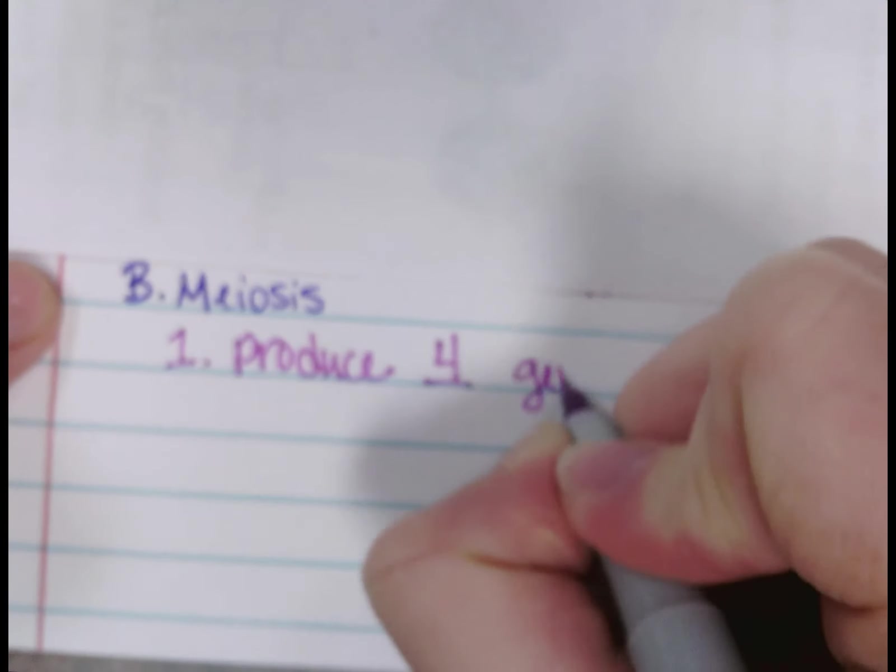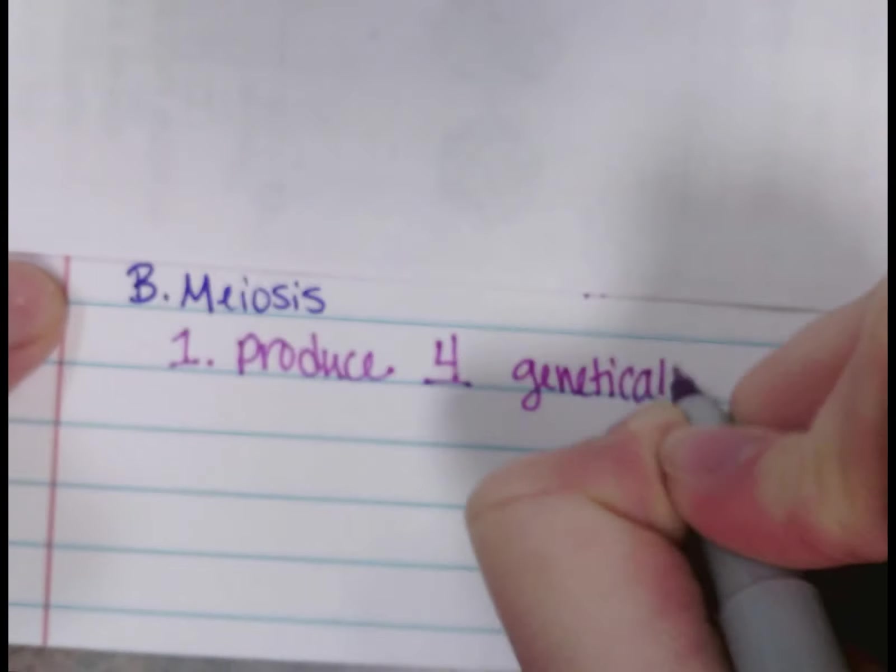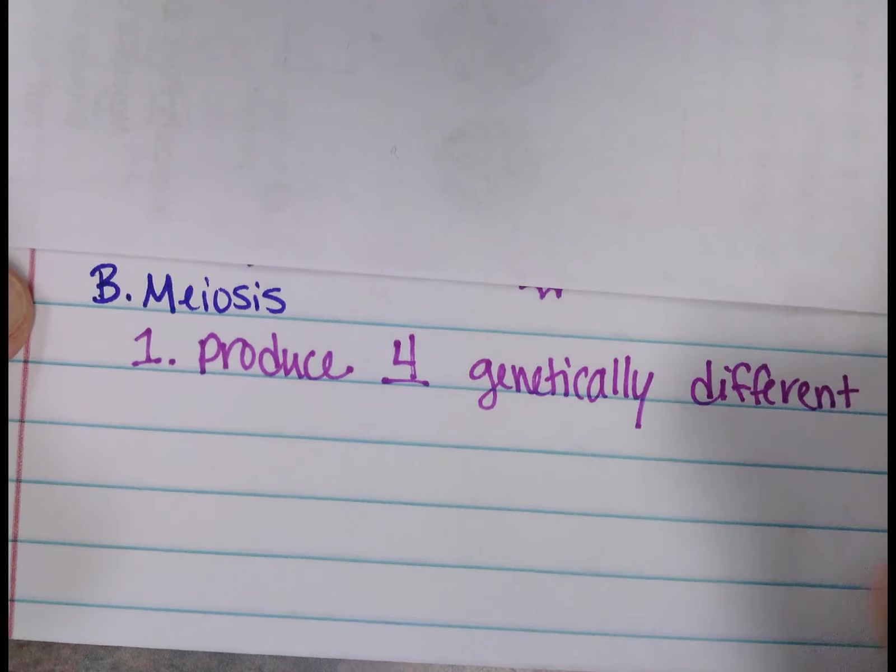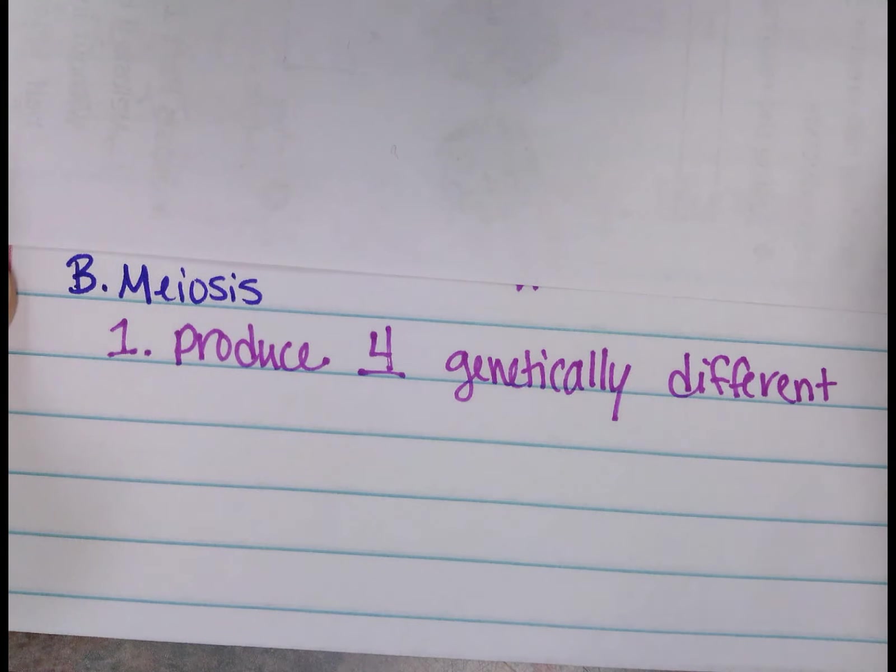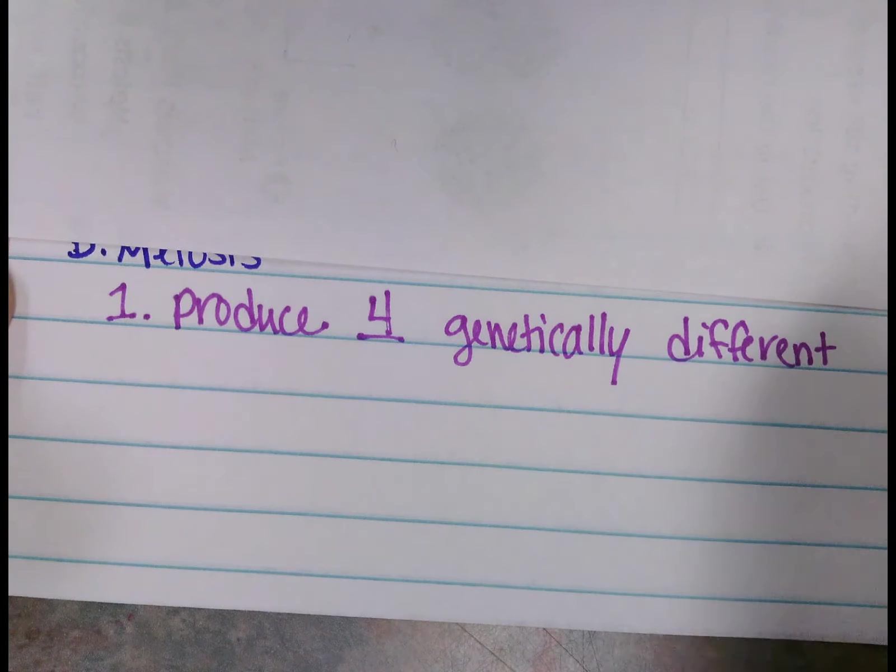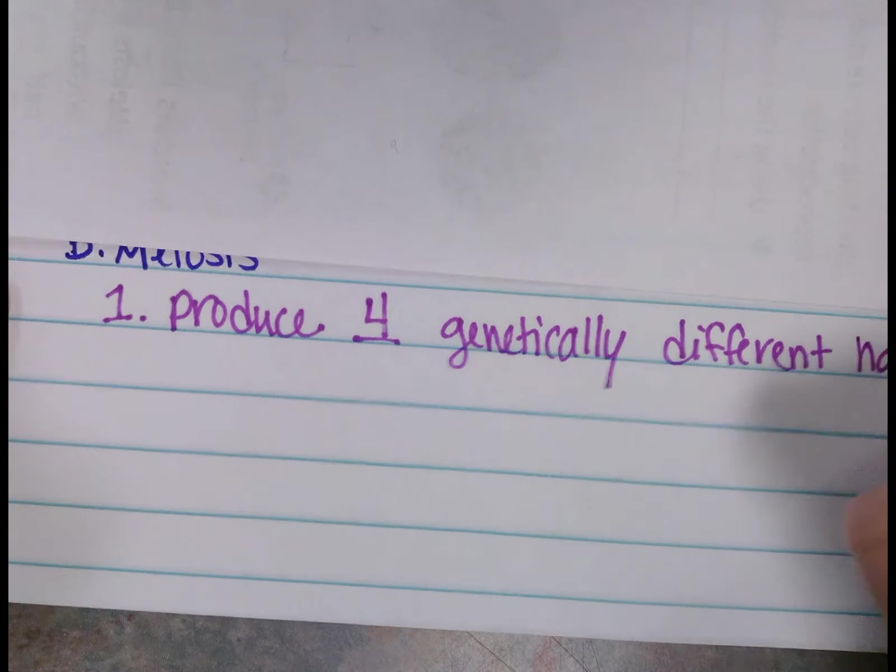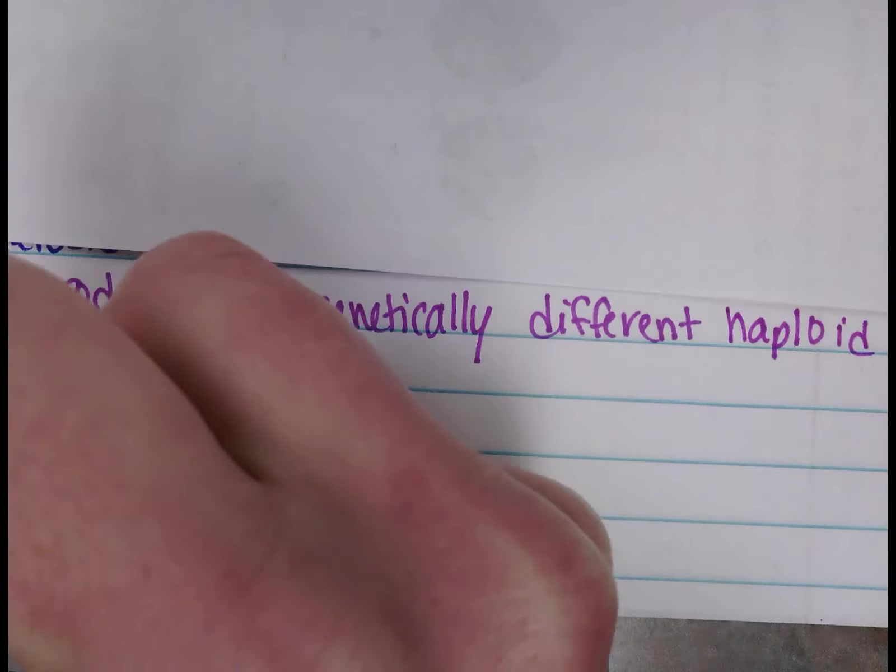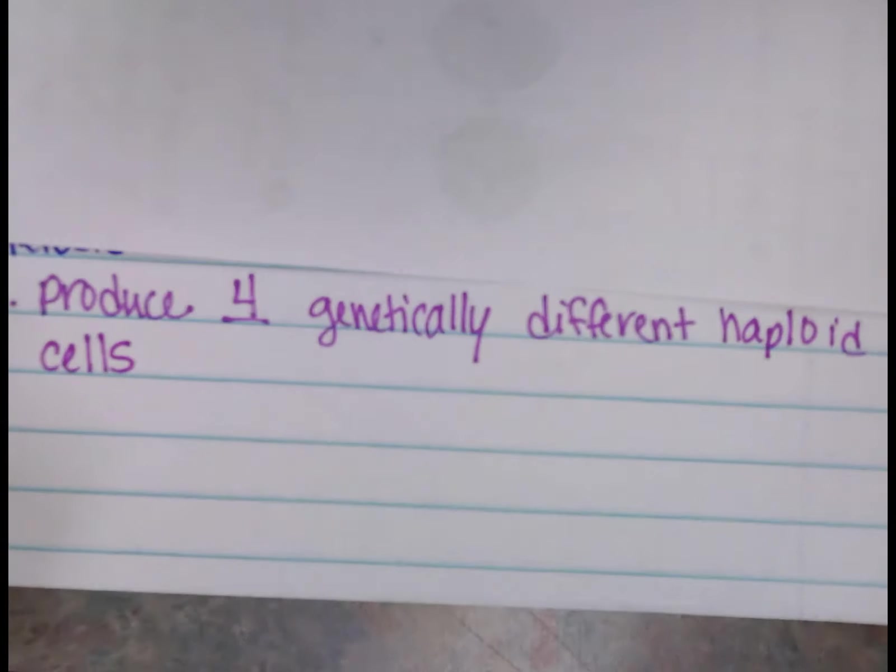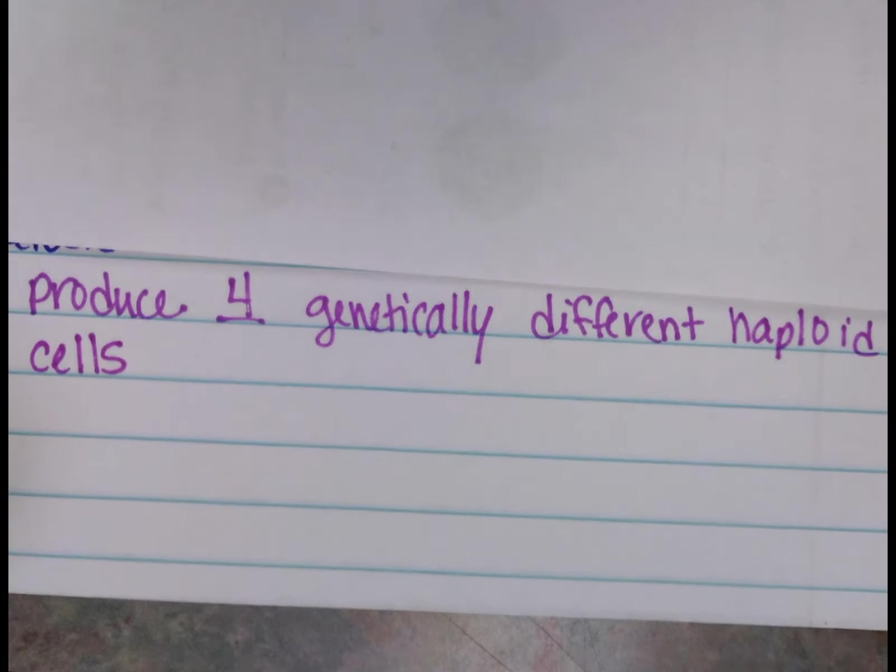Four genetically different—which is why you and your siblings do not look exactly the same. You have the exact same full blood parents. Assuming I'm talking about full blood siblings, you have the exact same parents, but you are genetically different from each other. You're not genetically identical to each other, unless of course you're identical twins. You are genetically different. Haploid cells. Oops, of course that's off the line. Haploid cells.